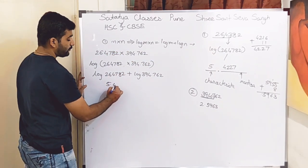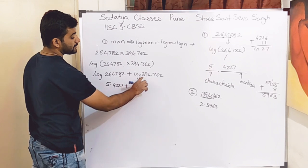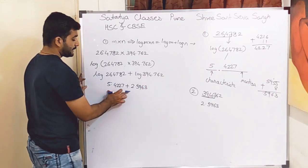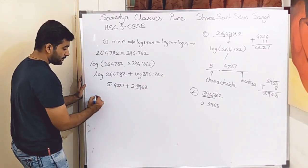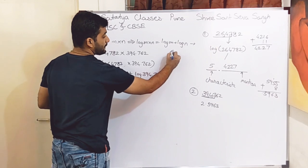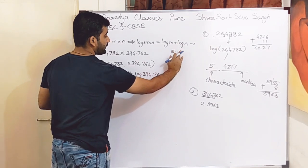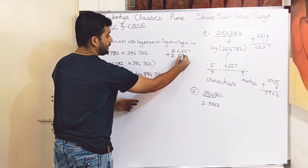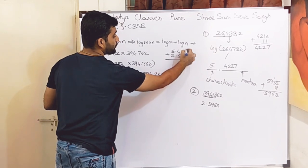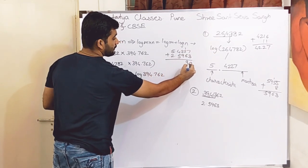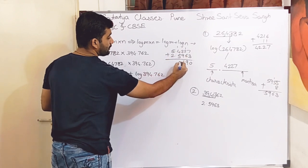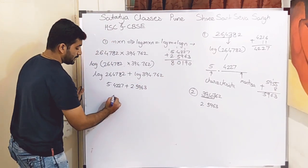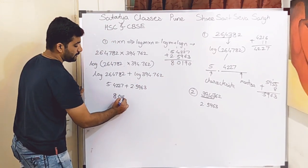We have already found log 264782 = 5.4228 and log 394762 = 2.5963. Adding these two log values: 5.4228 + 2.5963 = 8.0190.